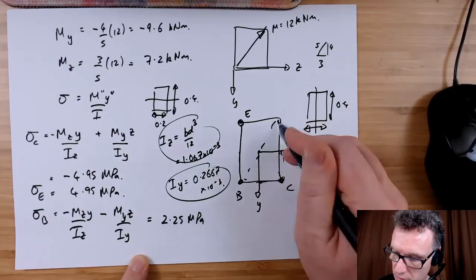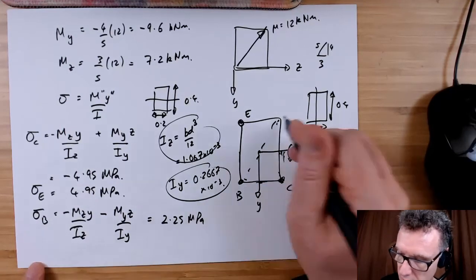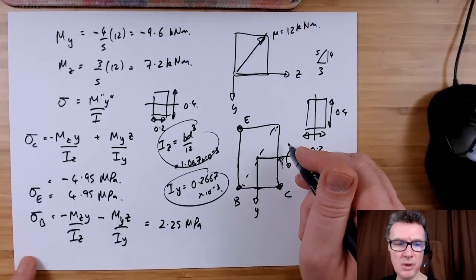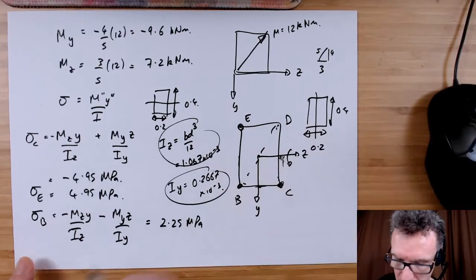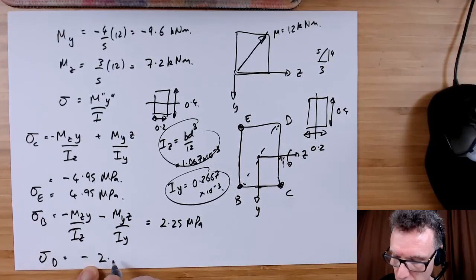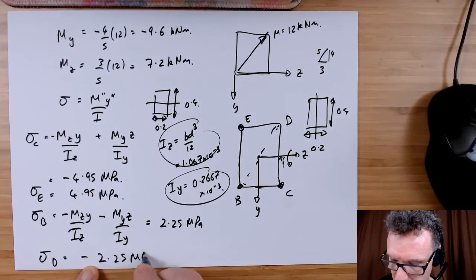Then you just use the argument or reflection from here to here. So the stress at the top-hand corner, which is point D, is the reverse of that: minus 2.25 megapascals.